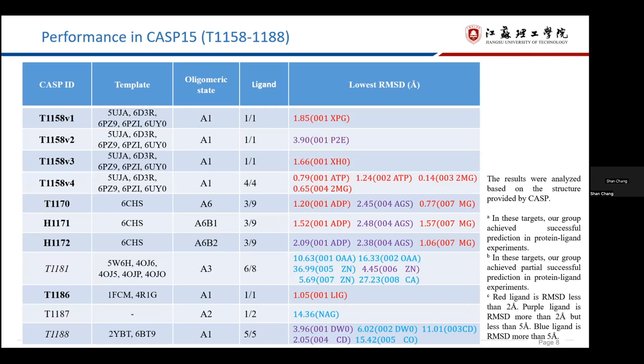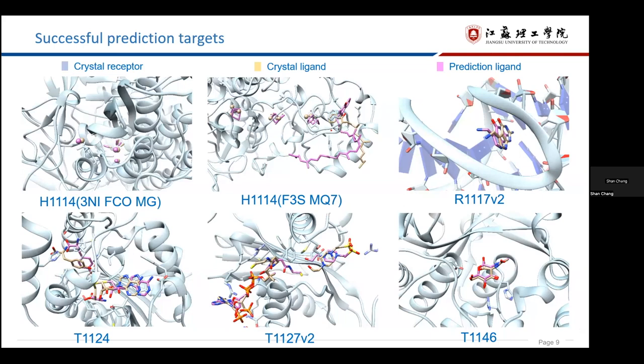Here are the successful targets predicted by our group. T1114 has a lot of ligands, 56 ligands. So we take one of the repeat units as example to see the prediction of seven ligands, like this one and this one. And the poses are almost correct.